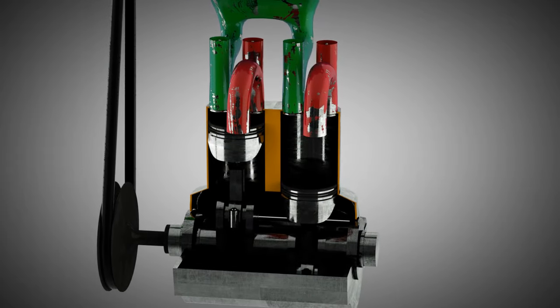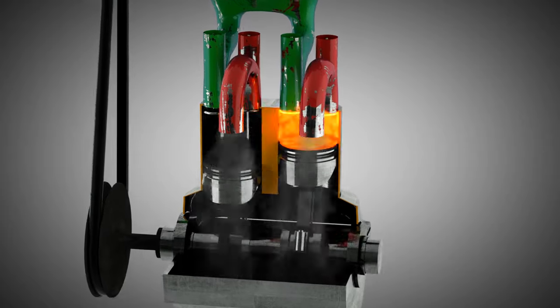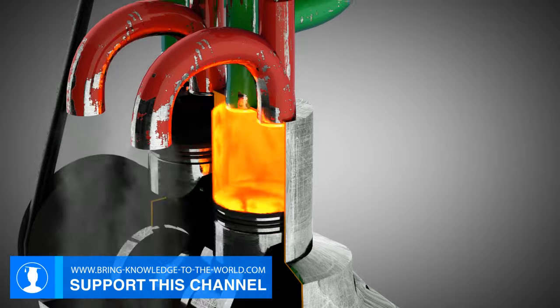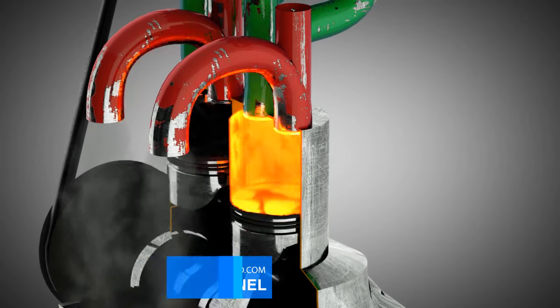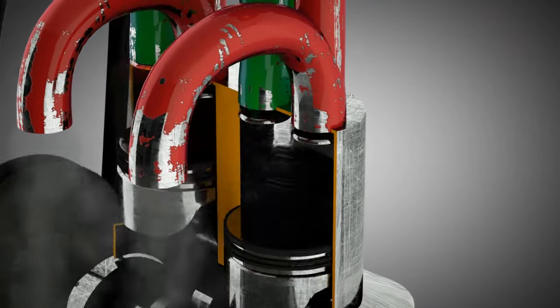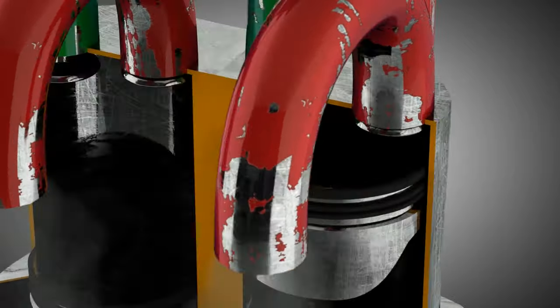The air from the blower can enter the combustion chambers of the engine via the pipes shown in green, thus burning more fuel than a suction engine. As already mentioned, it is useful to cool the air so that more oxygen can be pushed into the combustion chambers.